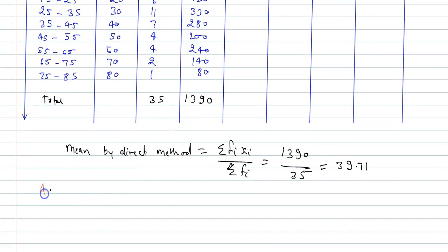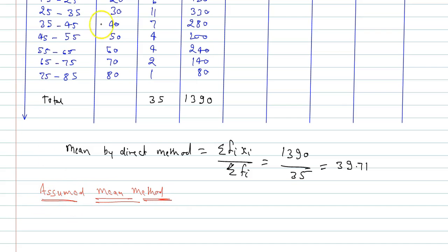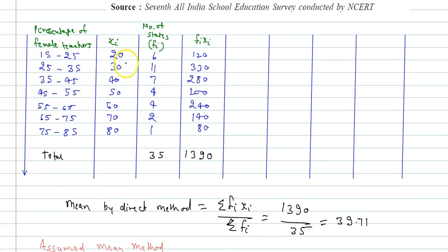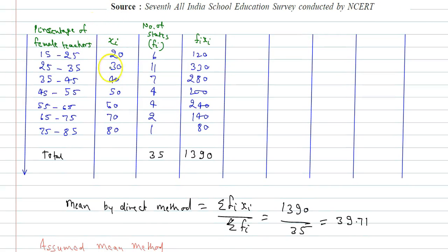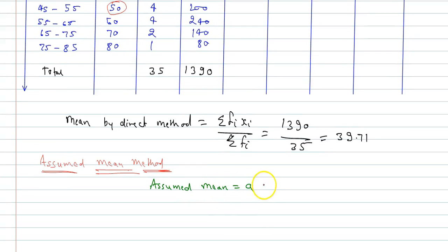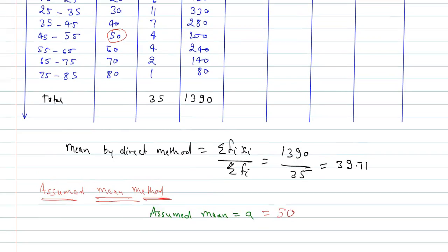Now we find the mean by the assumed mean method. In this method, we assume a mean value 'a' from among the Xi values. Generally, we choose the center of the Xi values as the assumed mean. Here the center of Xi is 50, so we choose assumed mean a = 50.